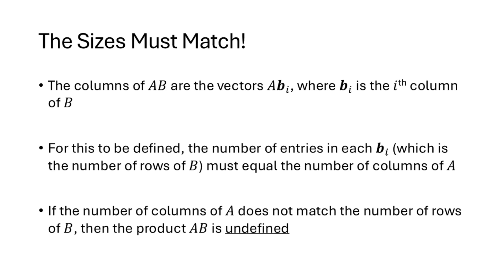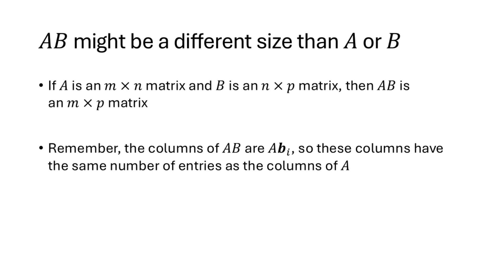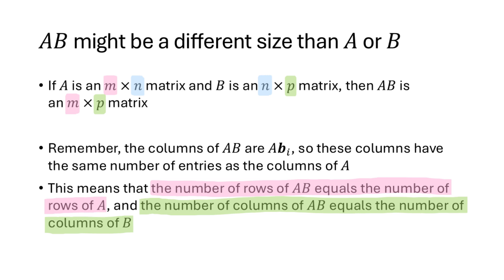For A times B to be defined, the number of entries in each column bᵢ — which equals the number of rows of B — must equal the number of columns of A. So the number of columns of A must match the number of rows of B; otherwise the product is undefined. If A is m×n and B is n×p, then AB is an m×p matrix: the rows come from A and the columns come from B.